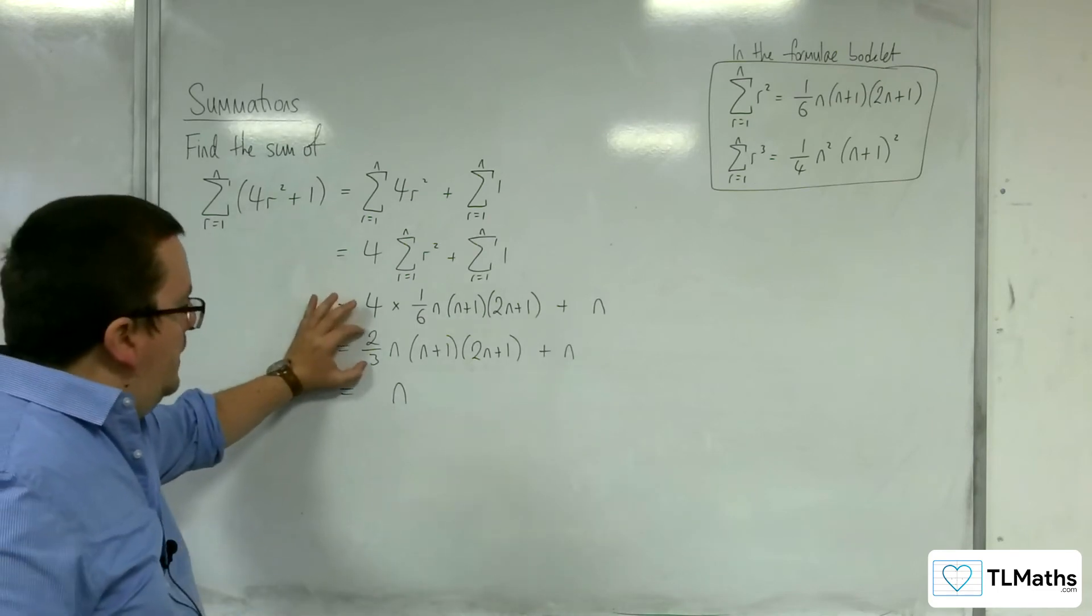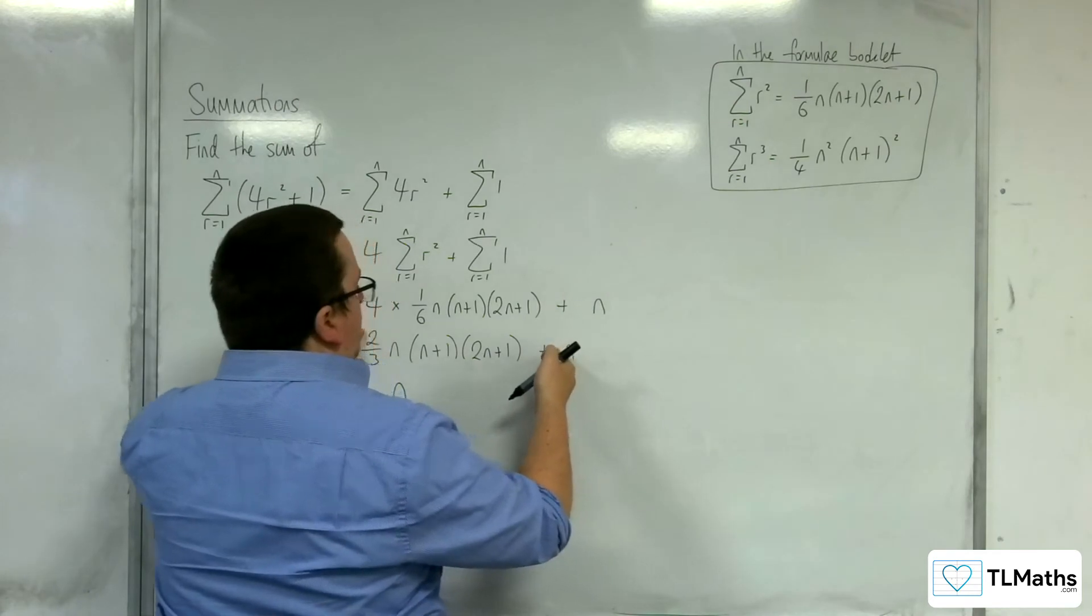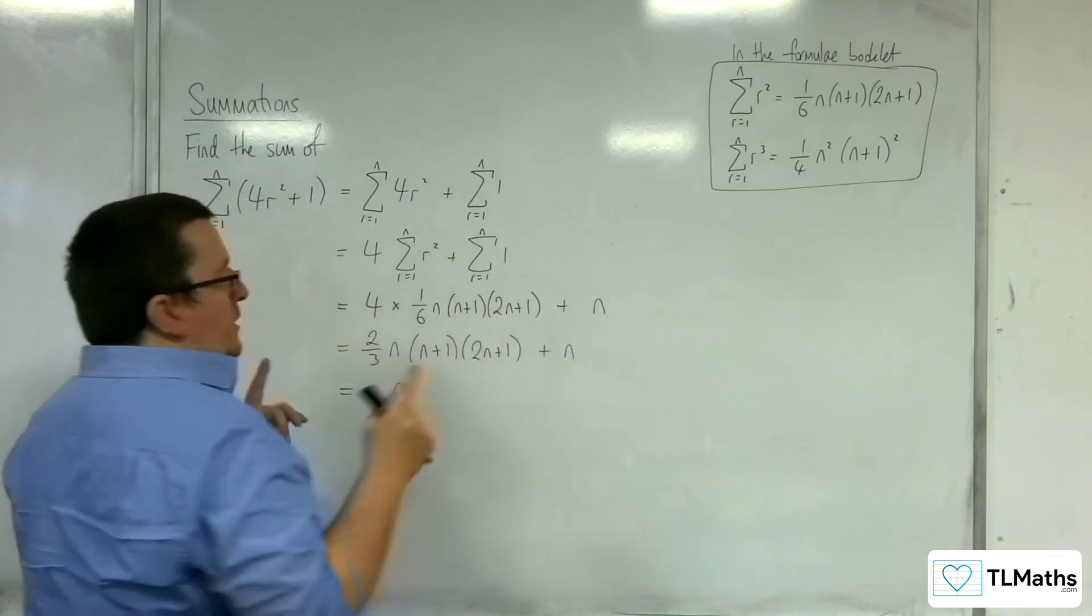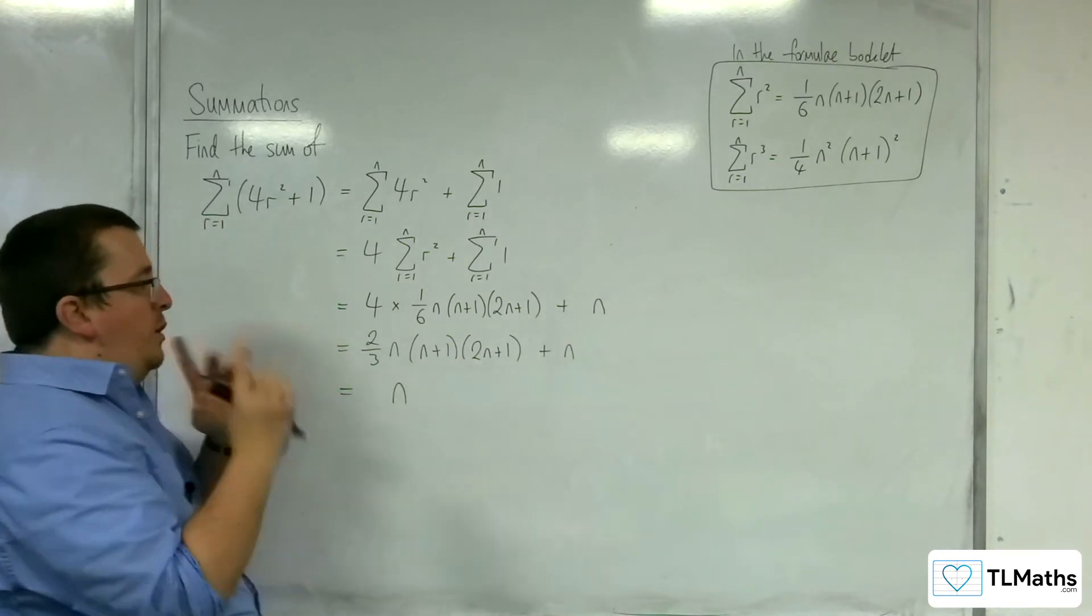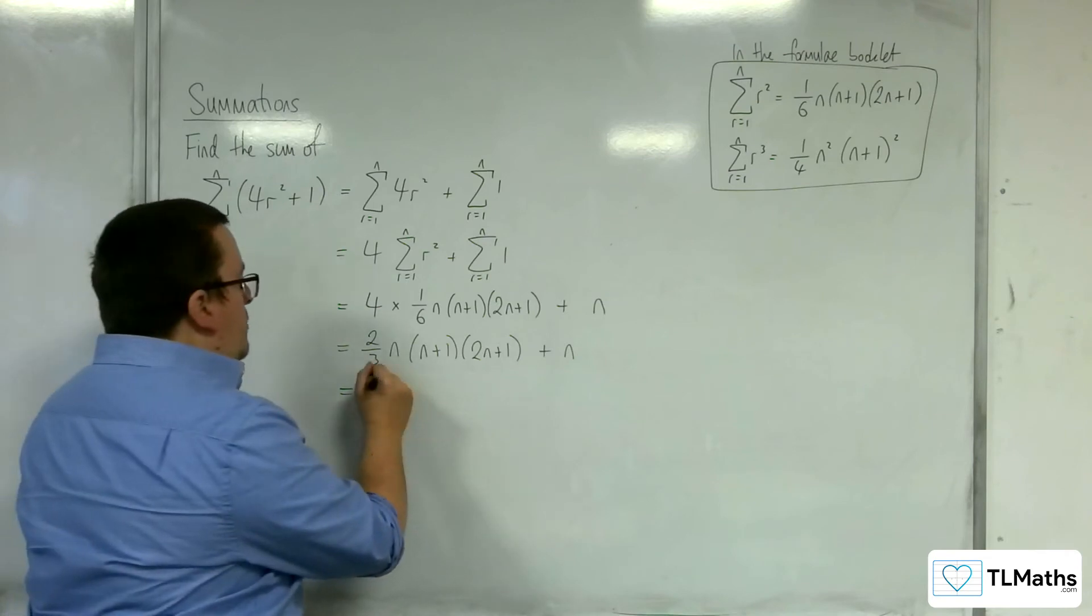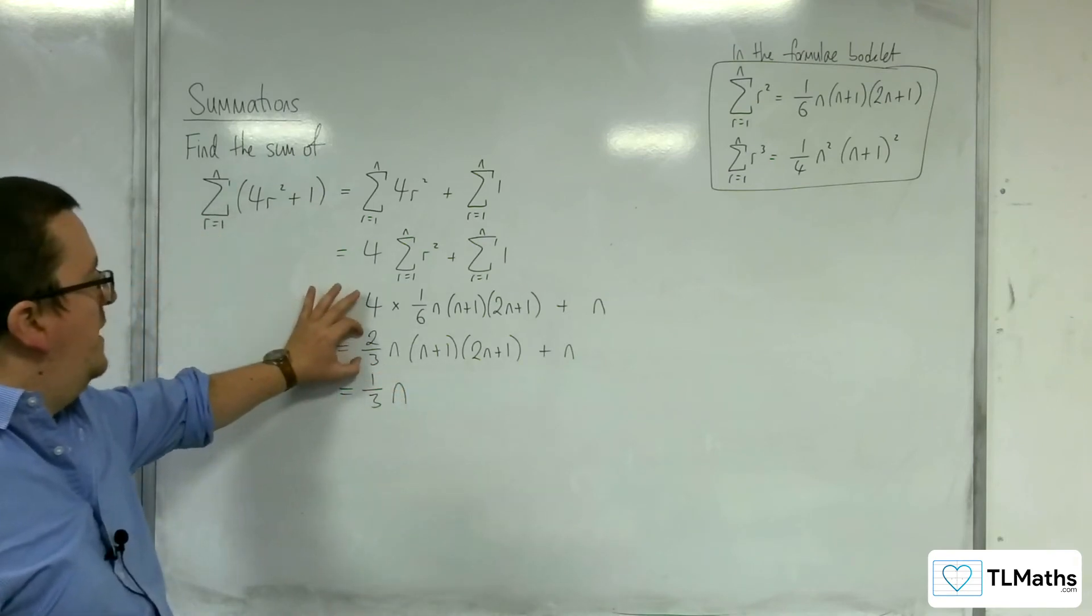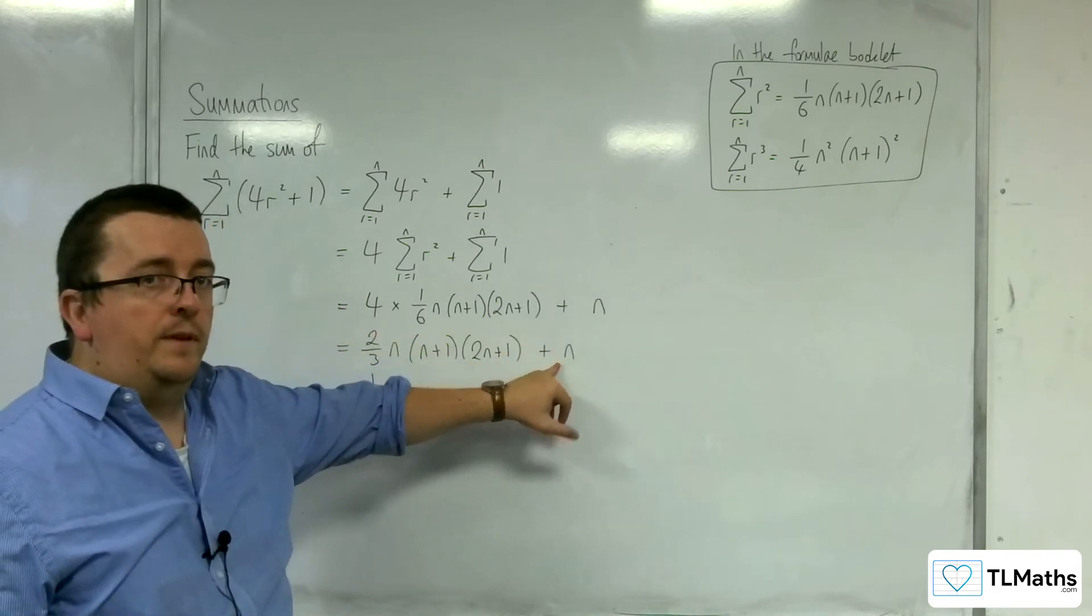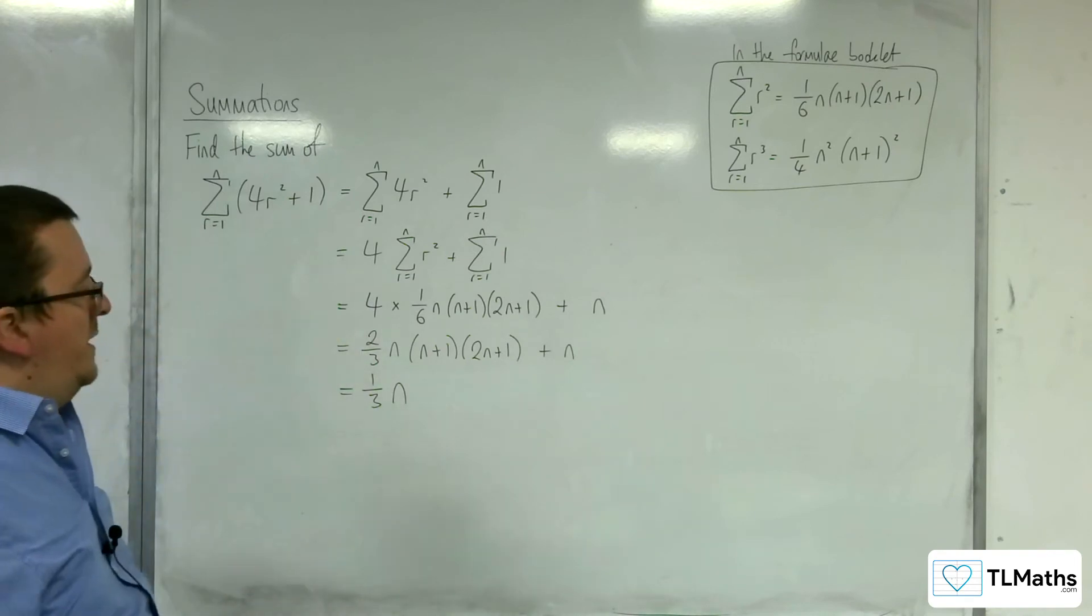If I factor out 2 thirds, I'm going to have to then have a 3 halves involved in order for the 2 thirds times 3 halves to make 1, which I don't want to have to deal with. So I don't want 3 halves in there. So I don't want 2 thirds. If I just factor out 1 third, then I know I'm going to have the 2 there can stay. And here I can just have 3. And so I keep nice integers inside my bracket.